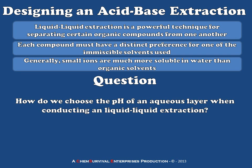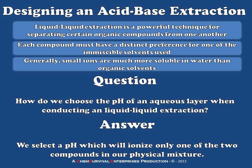Our question today is: how do we choose the pH of an aqueous layer when conducting a liquid-liquid extraction of this kind? The answer is we select a pH which will ionize only one of the two compounds in our mixture, and in doing so, we'll create a system where one compound would prefer to be in the water and the other would prefer to be in the organic.